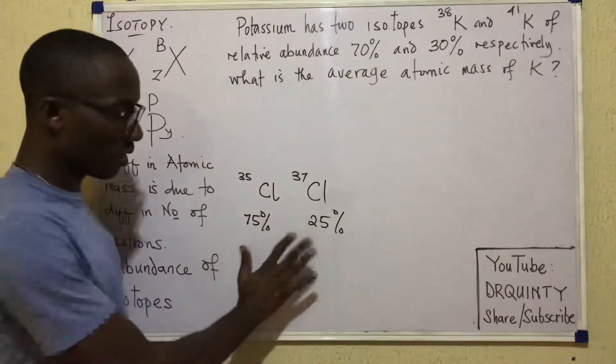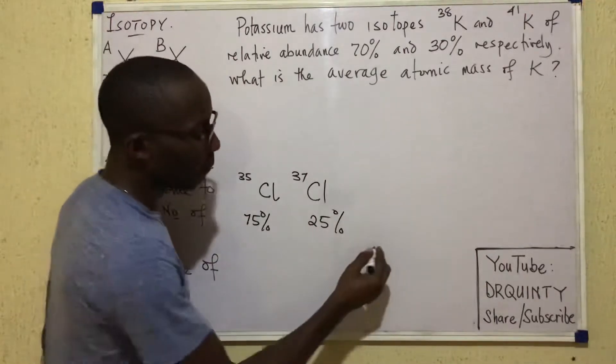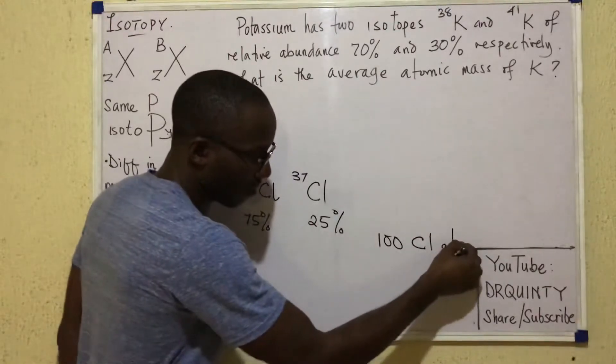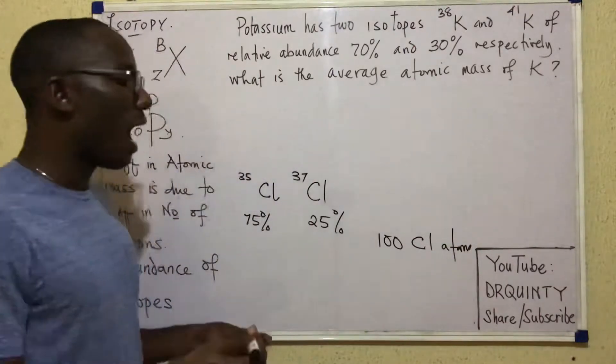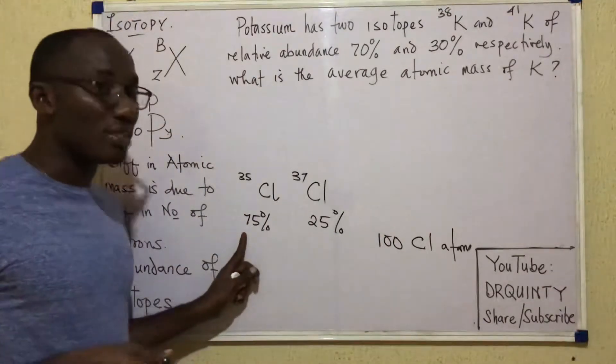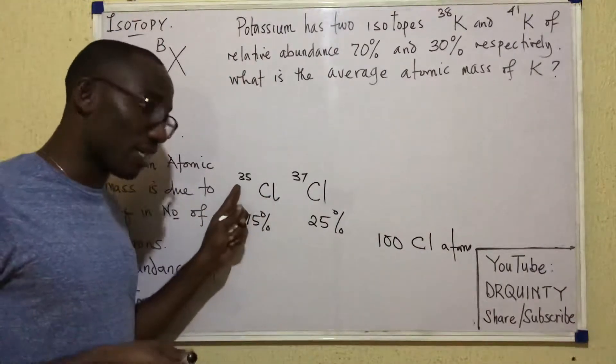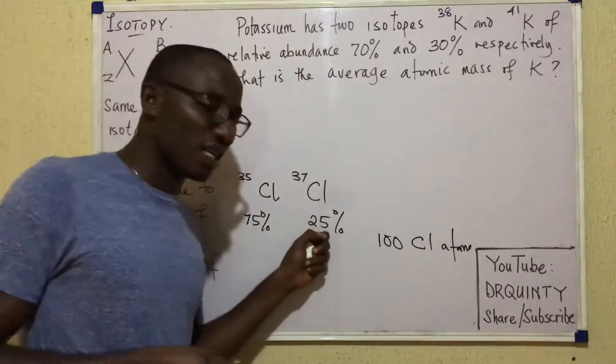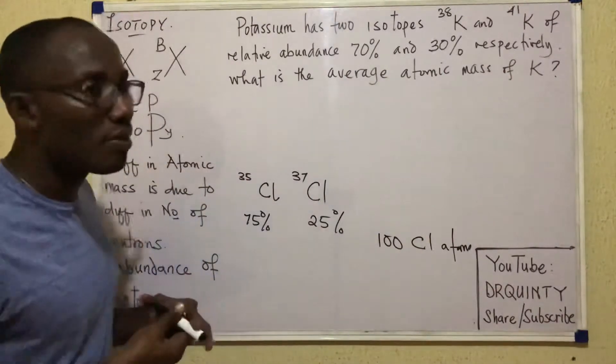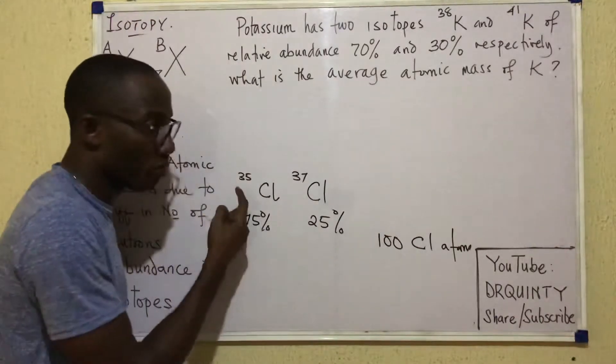Now for Chlorine 35 and 37 that have these abundances of 75 and 25%, see what it means. It means this statement means, this expression now means that if we randomly pick 100 Chlorine atoms, randomly 100, out of these 100 Chlorine atoms, around 75% of them will be this type of Chlorine, which is Chlorine 35. Then around 25% of them will be this other type of Chlorine.